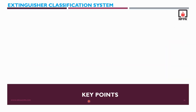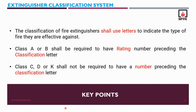Before we move ahead, we shall discuss the key points of extinguisher classification systems. The classification of fire extinguishers shall use letters to indicate the type of fire they are effective against. Class A or Class B extinguishers shall be required to have a rating number preceding the classification letter. Class C, D, or K shall not be required to have a number preceding the classification letter. These are the three key points to remember when defining extinguisher classification.